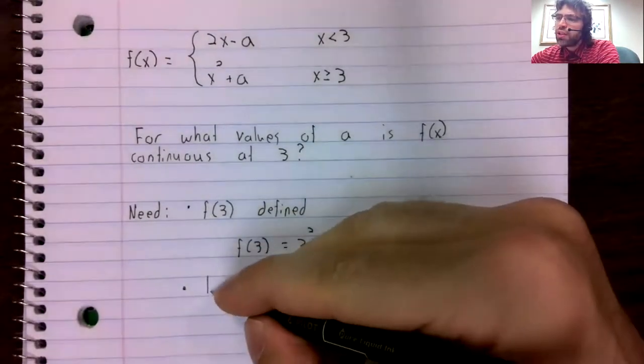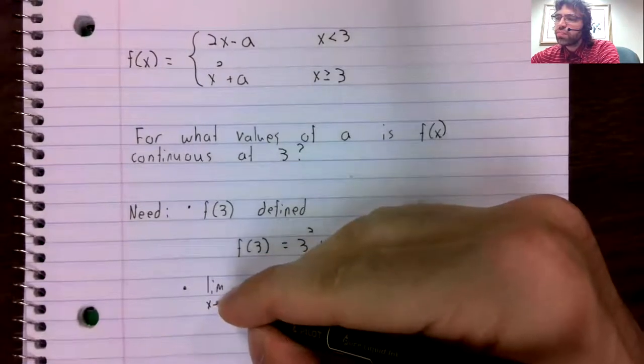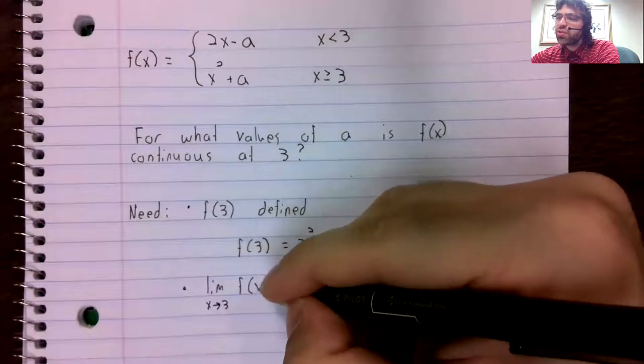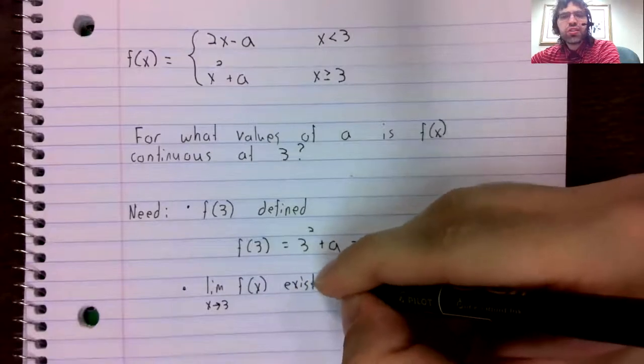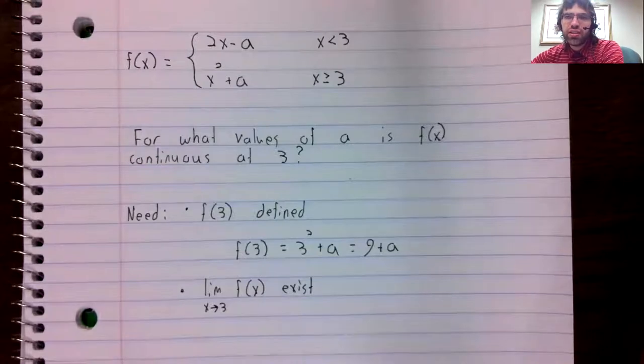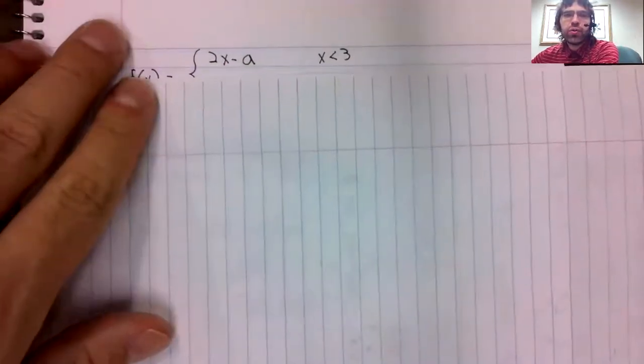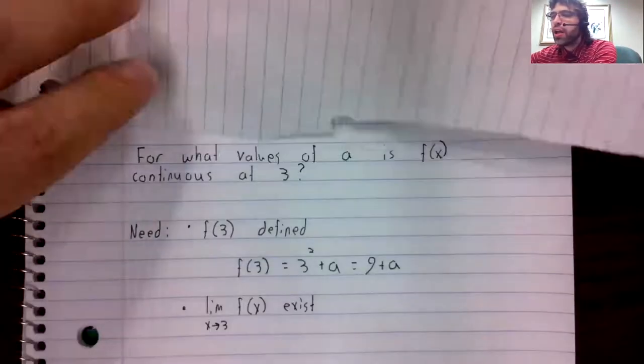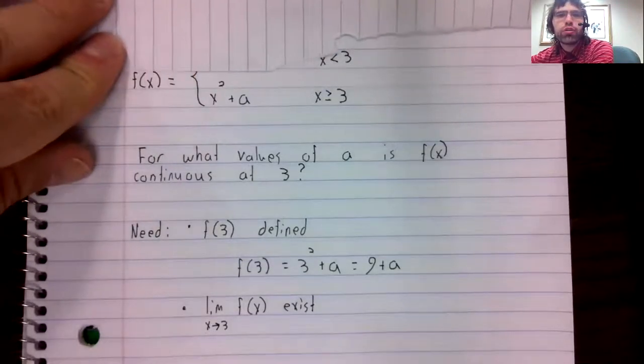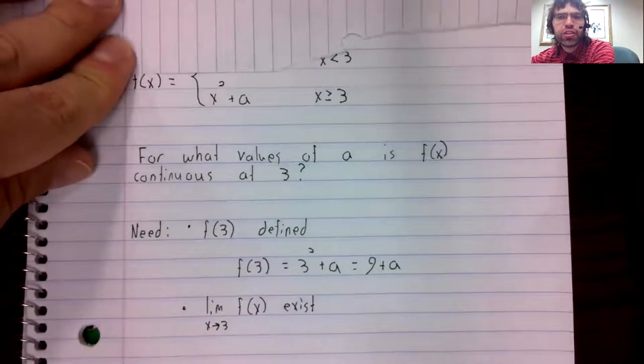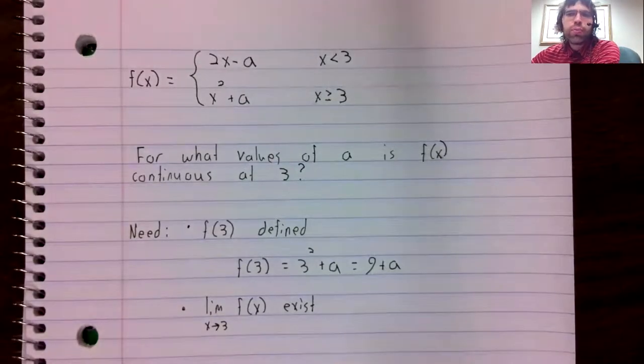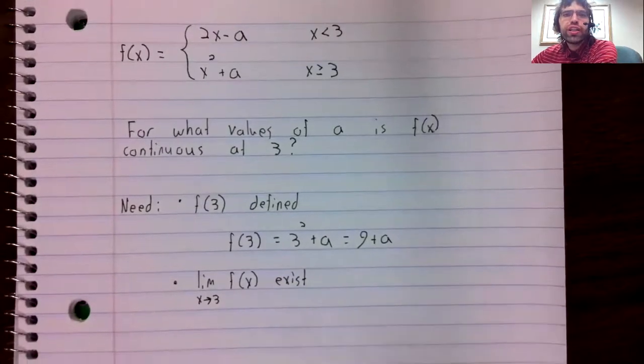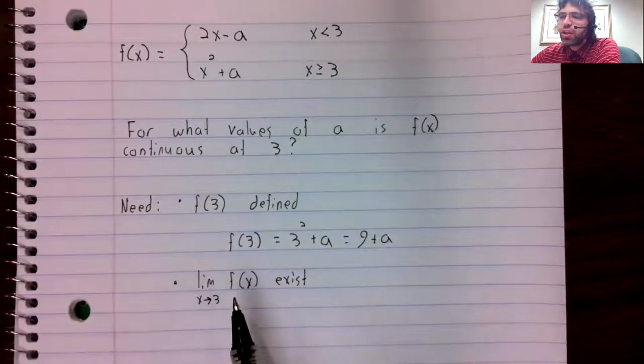Now we need this limit. And it's not at all obvious that this limit does exist, because when we approach three from one direction, we have one equation, and when we approach three from another direction, we have a different equation. And for the limit to exist, it shouldn't matter which side we approach three from.